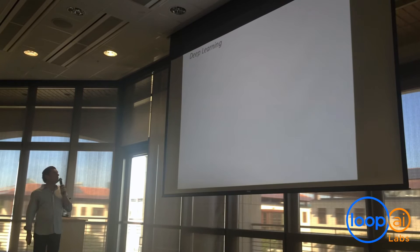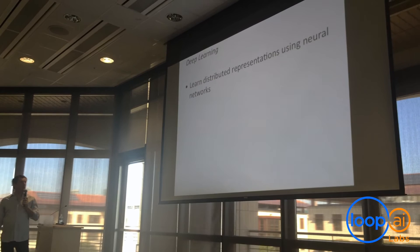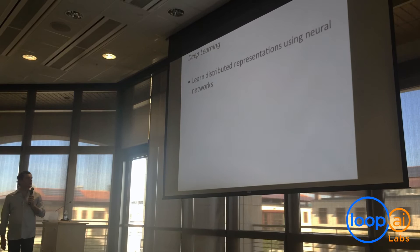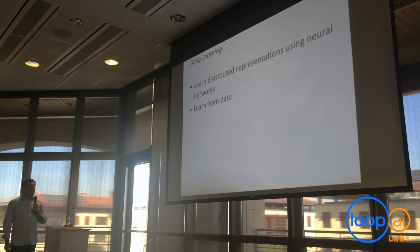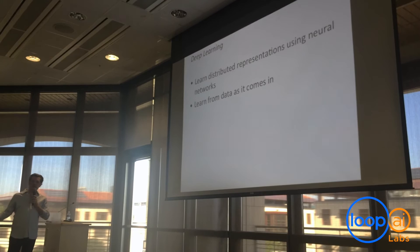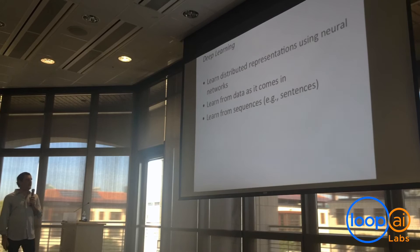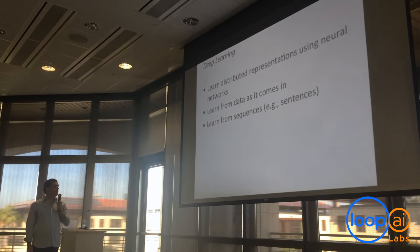Deep learning gave us a new way to learn distributed representations using neural networks — first with Yoshua Bengio in the early 2000s doing neural language models, and then with Tomas Mikolov's word2vec and the CBOW and skip-gram architectures. These are just different ways to take neural networks and learn from the data itself as it comes in, so you don't have to have a predefined table of all your vocabulary — you can just keep learning things as new sentences come in. You can also learn from sequences using architectures like recurrent neural networks.